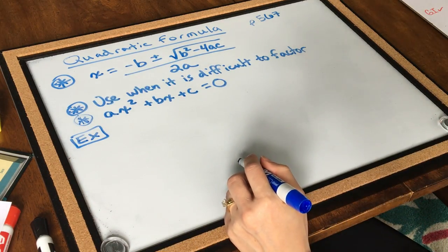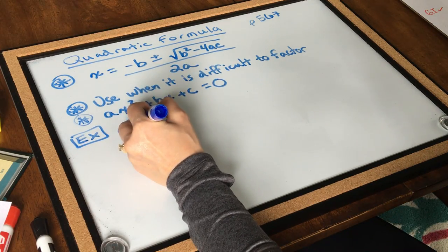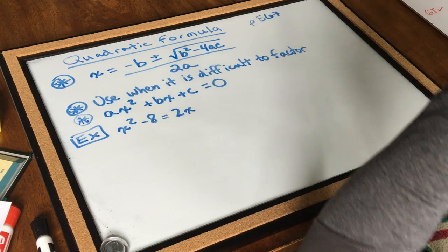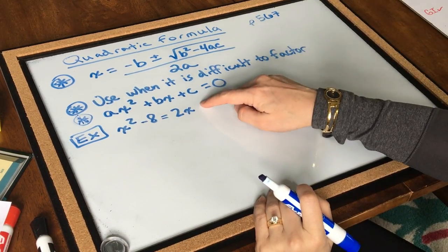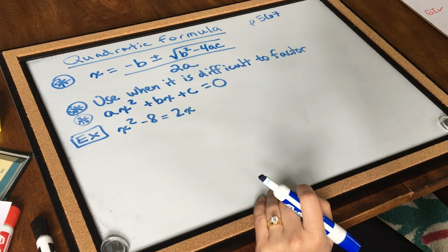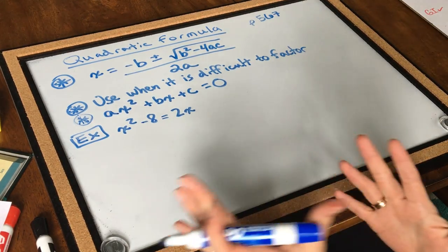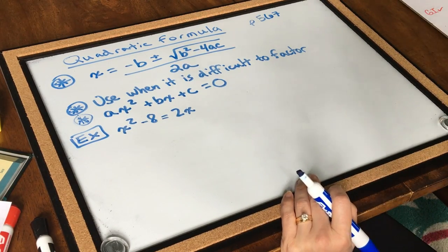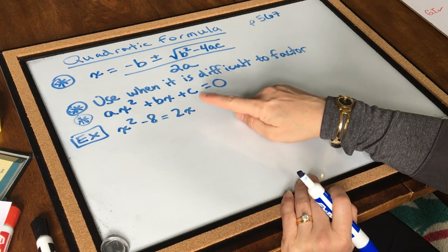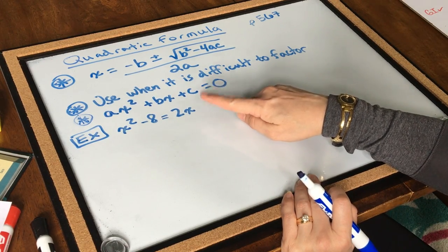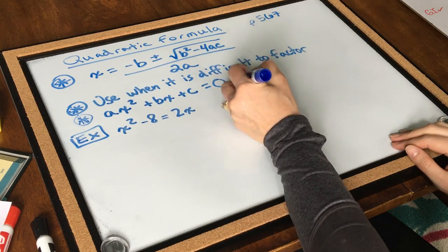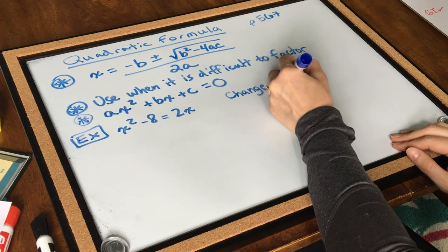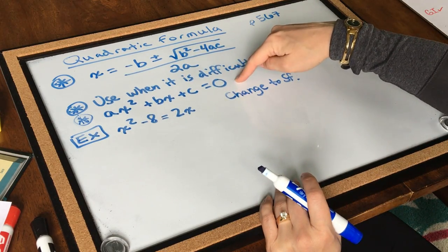I'm going to do the example: x squared minus 8 equals 2x. This particular example I personally would probably use factoring, but we're going to use the quadratic formula so we can practice and give it a try. First thing — is this in standard form? It is not, so the first thing I have to do is change it to standard form. That means I need the format ax squared plus bx plus c equals zero.